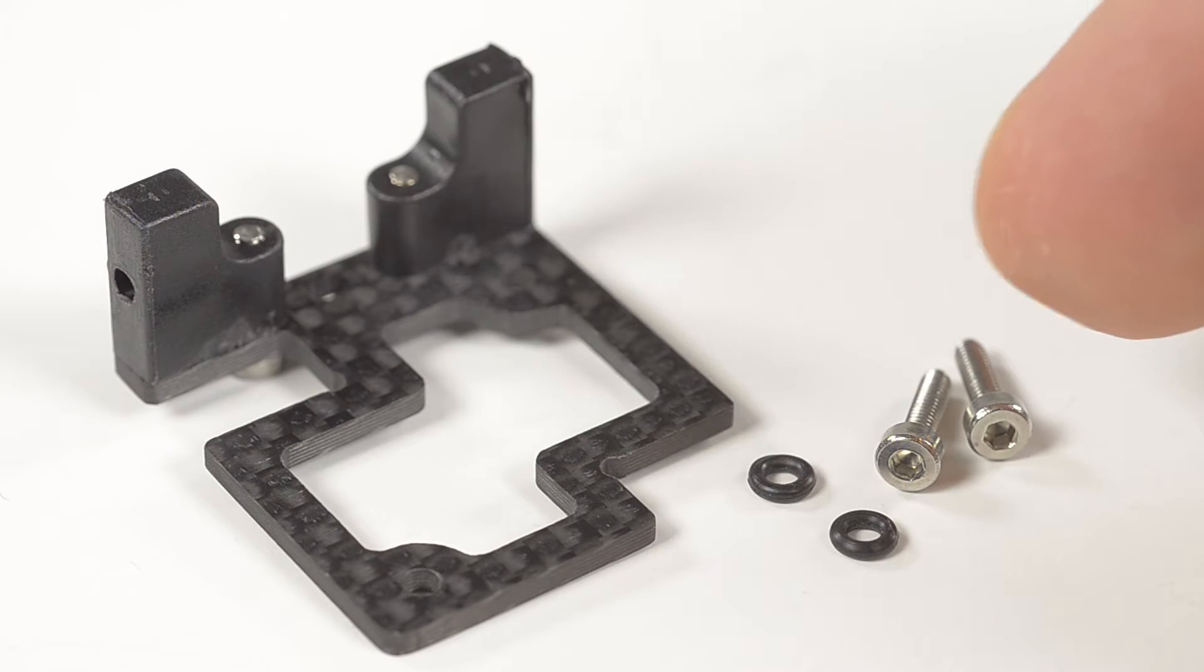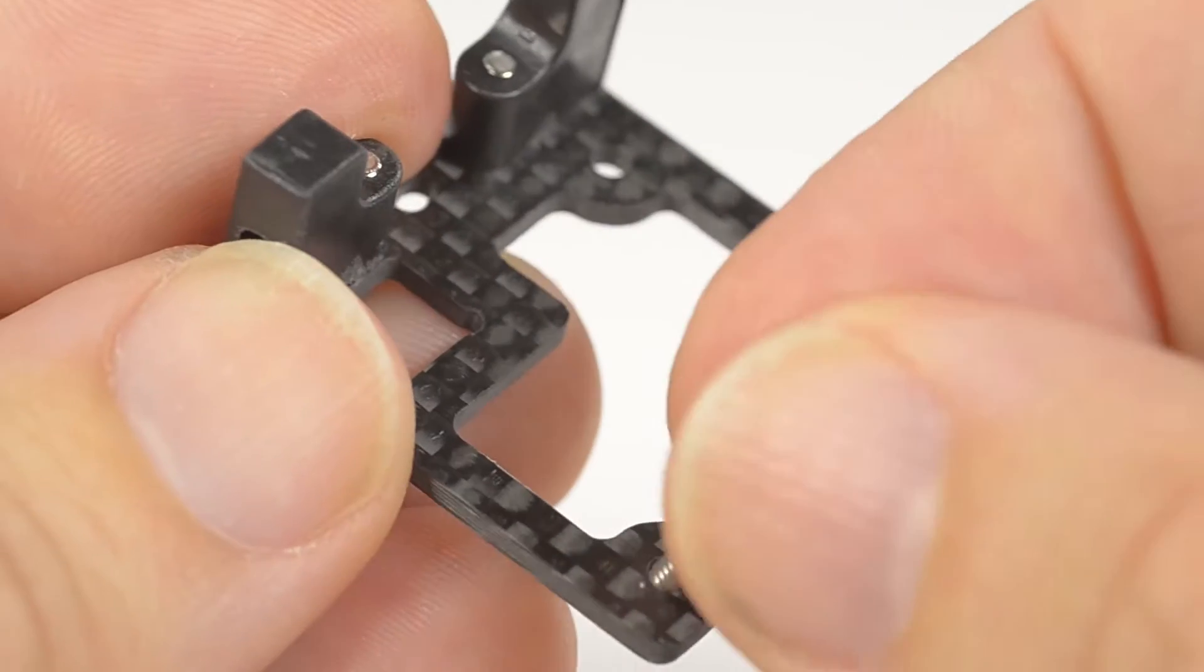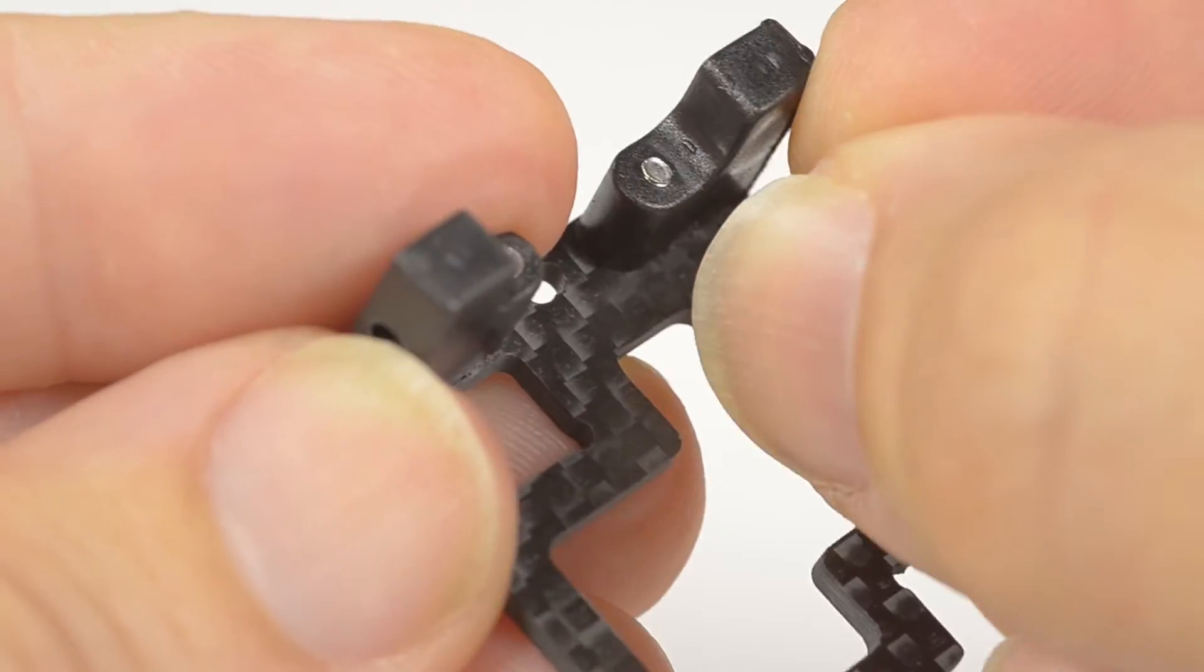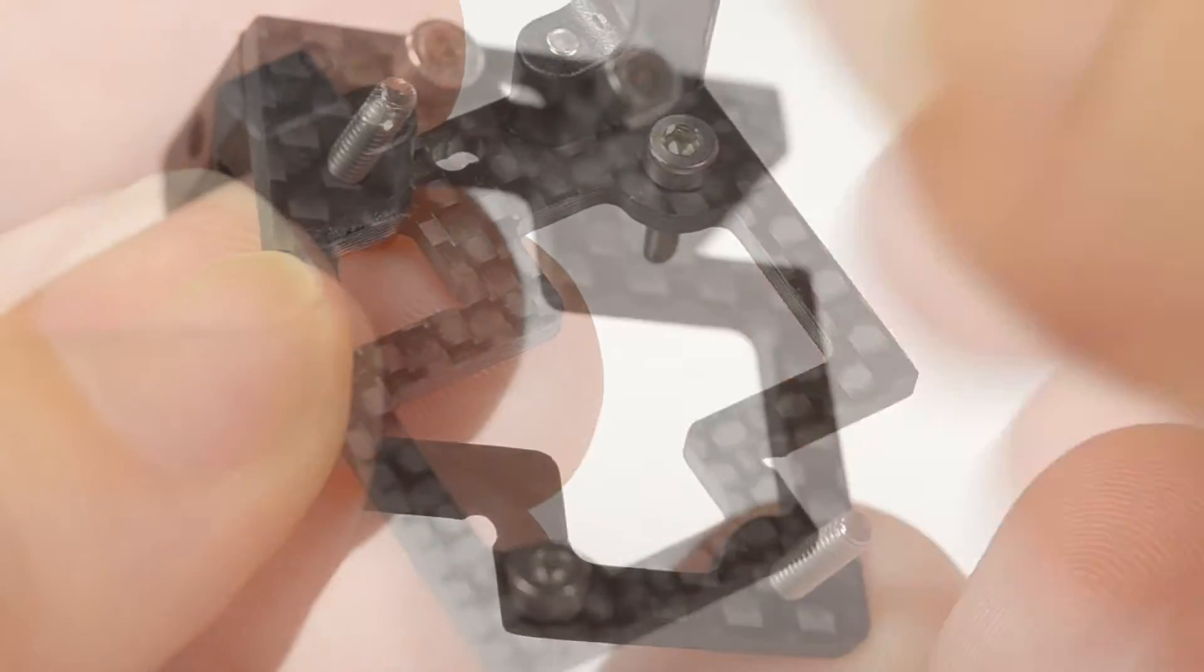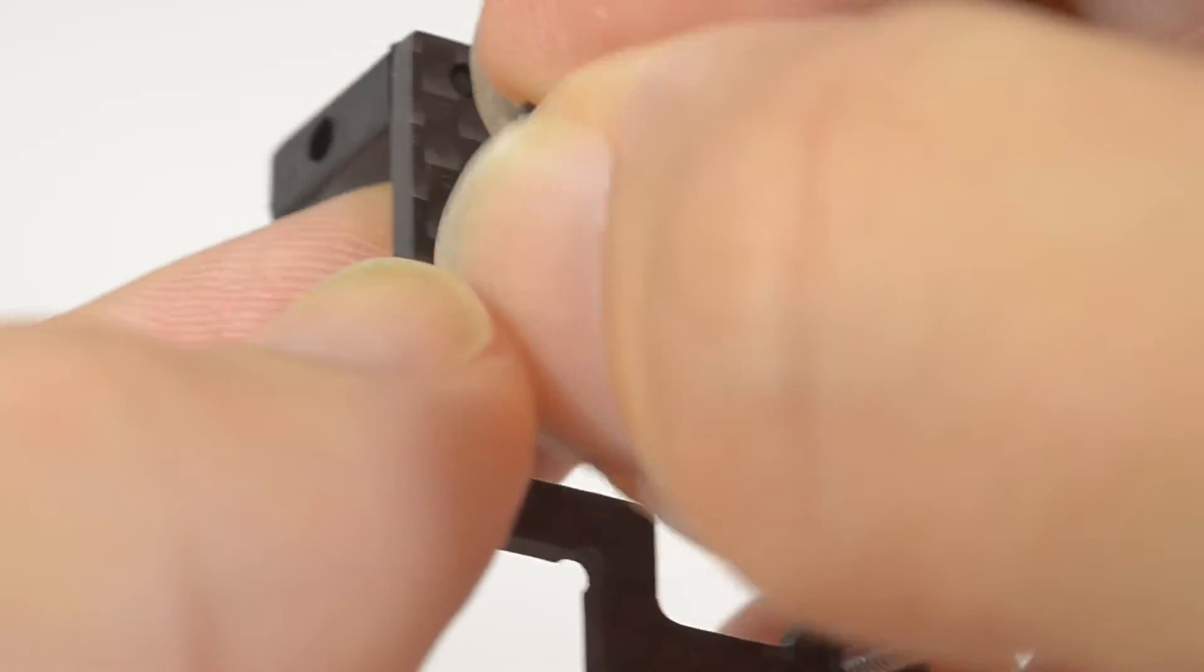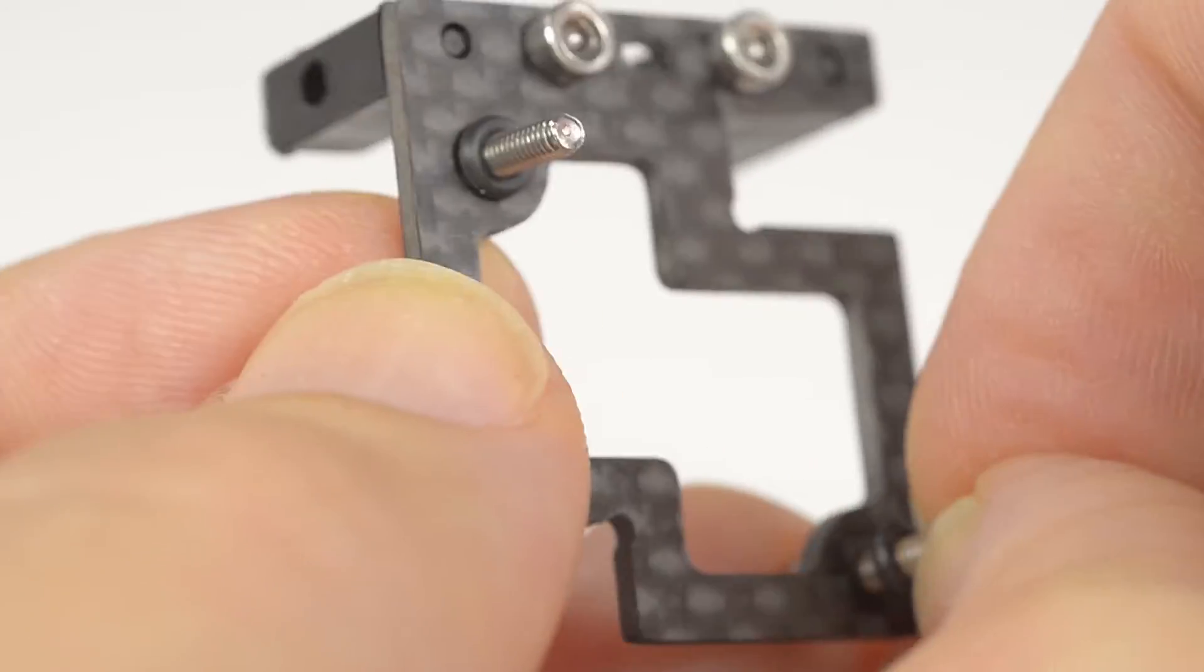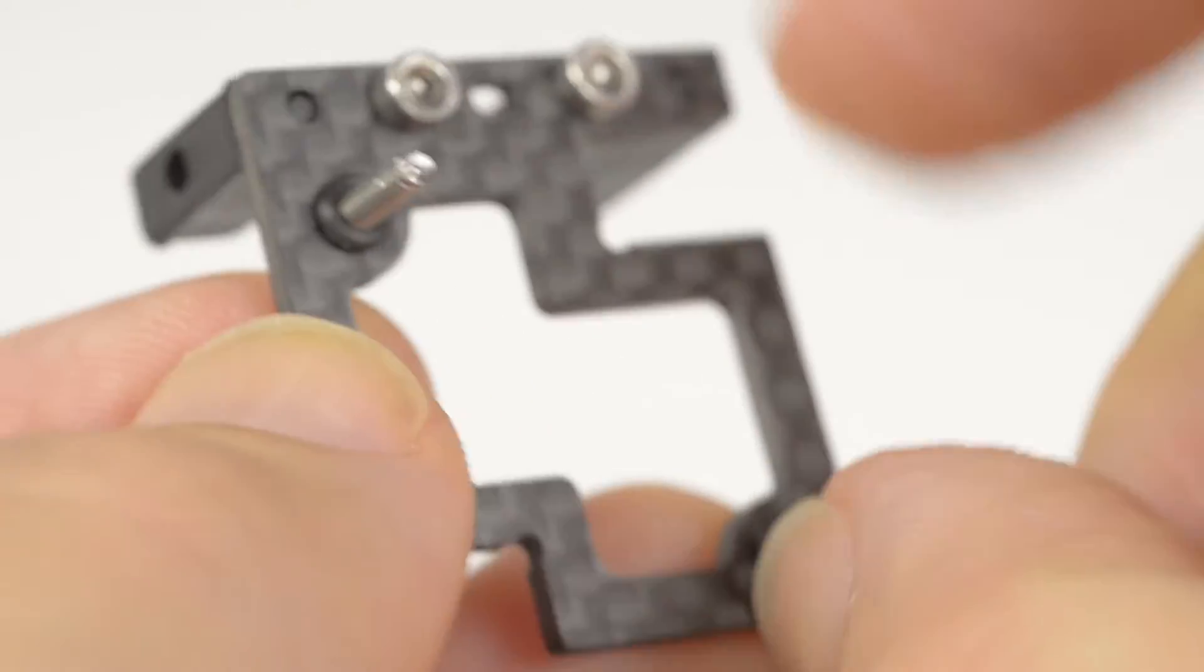Take two O-rings and two M2 by 8 screws. Place the screws through from the back of the plate. Mount the O-rings on the other side of the screws, pushing them all the way to the plate.